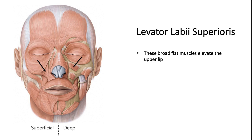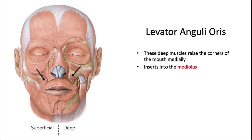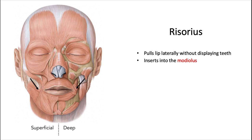The levator labii superioris are broad, flat muscles that elevate the upper lip, originating just below the orbit. The levator anguli oris are deep muscles that raise the corners of the mouth medially, elevating the angle of the mouth. They originate from the canine fossa just below the infraorbital foramen and insert into the modiolus. Lastly, the risorius pulls the lip laterally without displaying the teeth — known as a grimace — and also inserts into the modiolus.